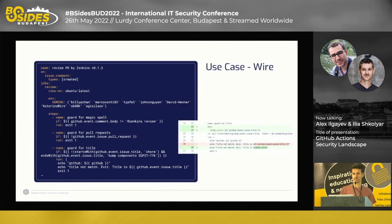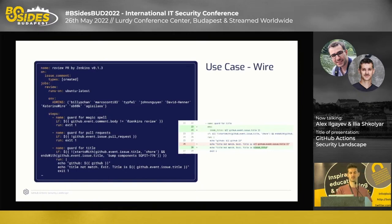After we disclosed this issue to Wire, they were very fast in patching the problem, and the fix was very simple. You simply store the issue title in an environment variable using the 'env' section at the top. Then you use that variable in the script — it is already escaped and the injected code will not run when used in this format.